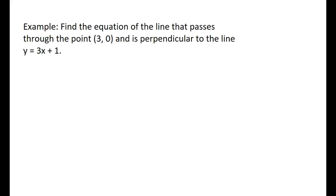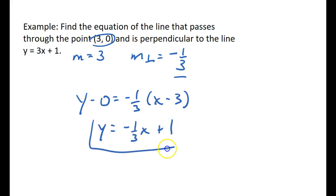So let's find the equation of the line that passes through the point (3, 0) and is perpendicular to the line y = 3x + 1. So the slope of this line is positive 3. That means the perpendicular slope is going to be -1/3. So I've got my slope, got my point. Let's put it in point-slope form. y - 0 = -1/3(x - 3). y = -1/3x + 1. And there you go. This line is perpendicular to this line, and it passes through that point.